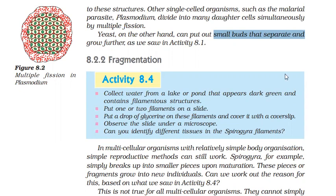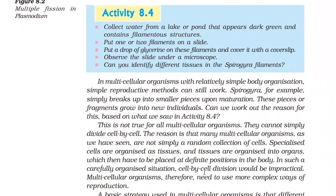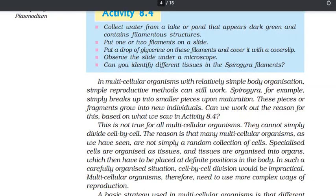Another method is fragmentation, seen in multicellular organisms with a simple body design, like Spirogyra. The filamentous body breaks into smaller pieces or fragments, and each fragment has the capacity to form a new individual. However, not all multicellular organisms can show fragmentation, because cells form tissues and organs placed at definite positions in the body. So fragmentation is not applicable to all multicellular organisms — it applies to simple organisms like Spirogyra. Thank you very much.